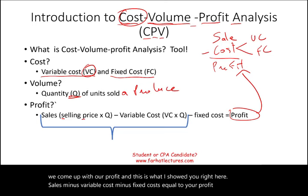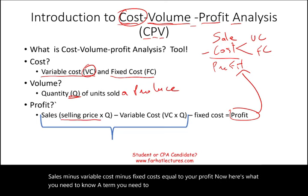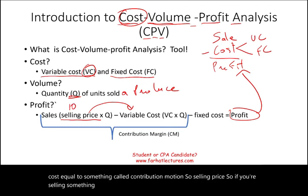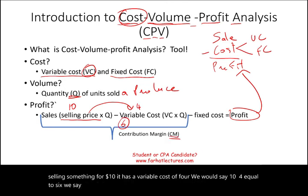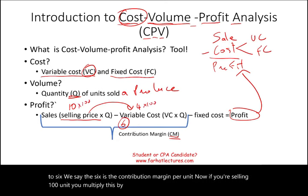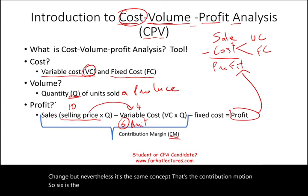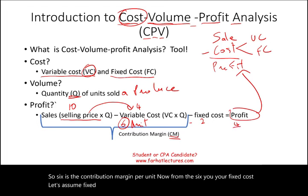A key term: selling price minus variable cost equals contribution margin. For example, if you're selling something for $10 with a variable cost of $4, then $10 minus $4 equals $6 — the contribution margin per unit. If you're selling 100 units, multiply by 100 and the total contribution margin changes accordingly. From the contribution margin per unit of $6, deduct fixed cost — say $2 — and your profit is $4.